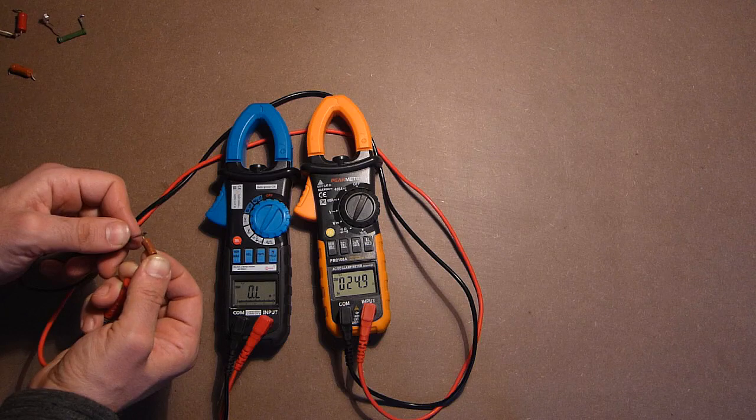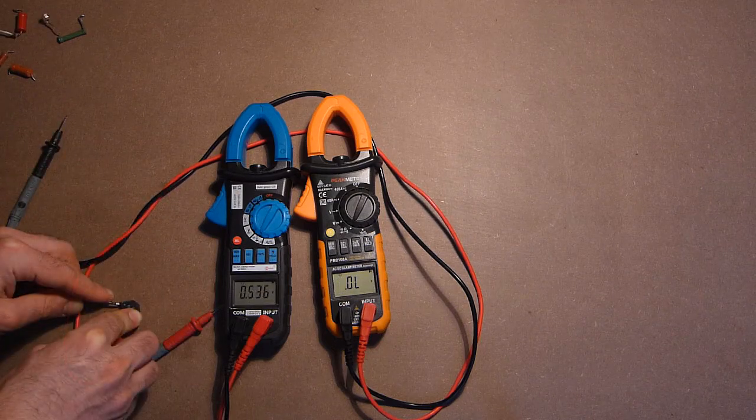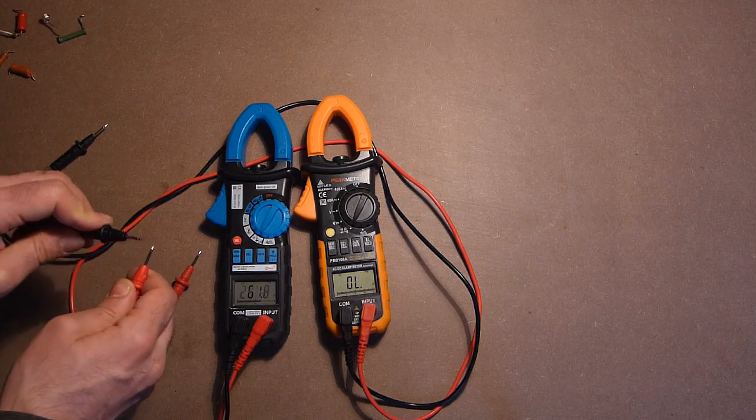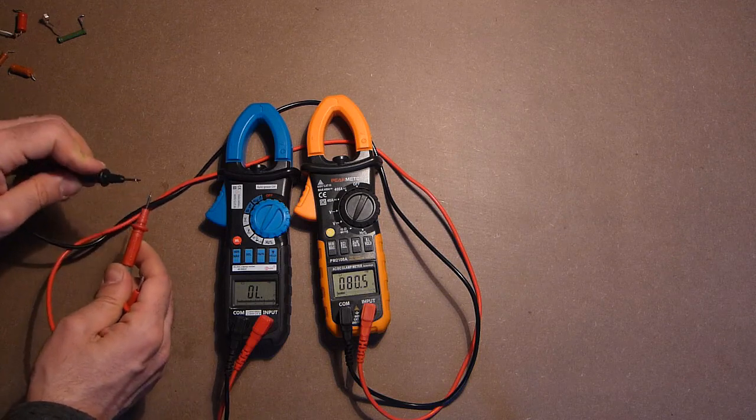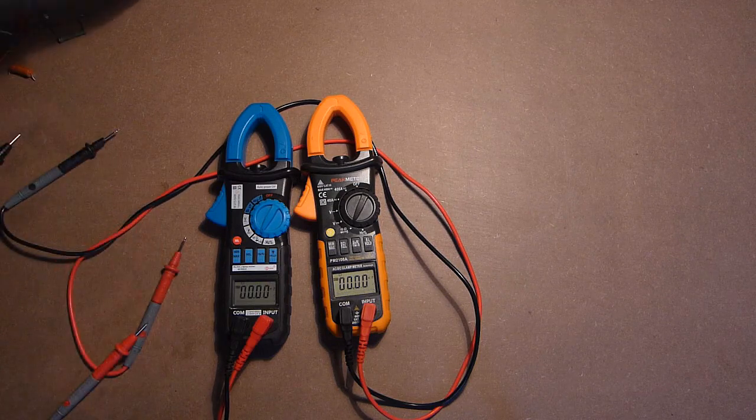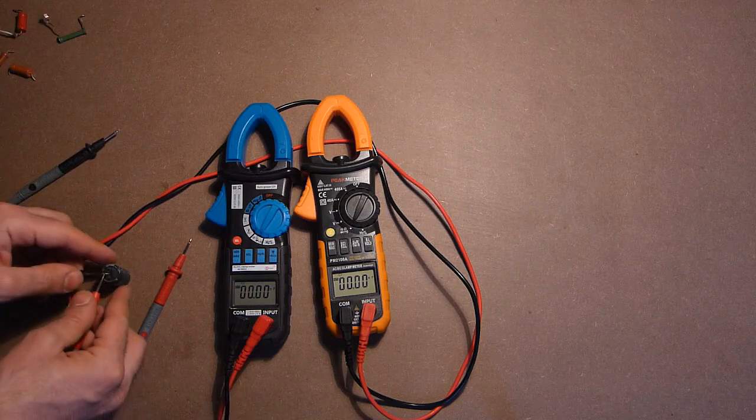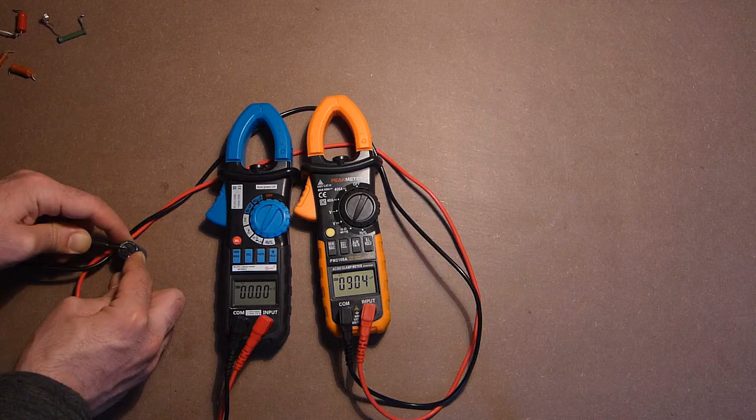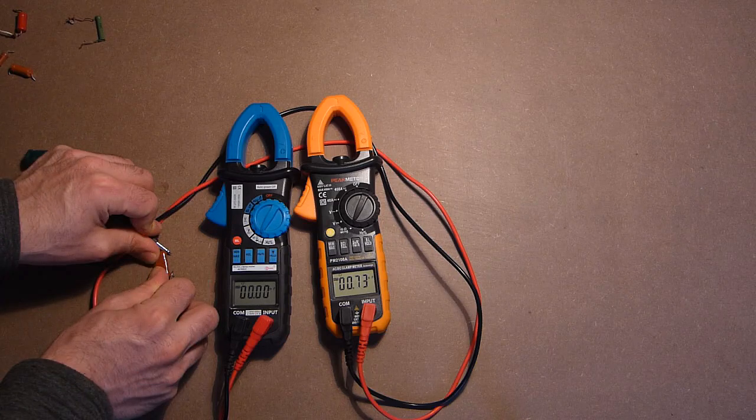Diode check: 536, 525. Beeper test. Capacitor: 889, 904. Then 76, 73.